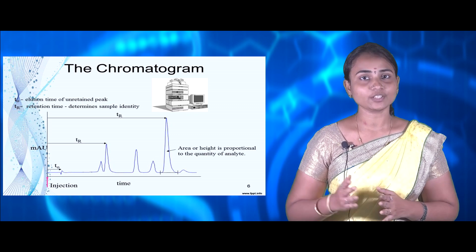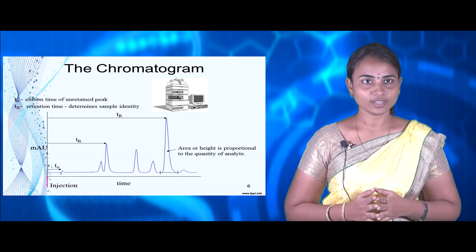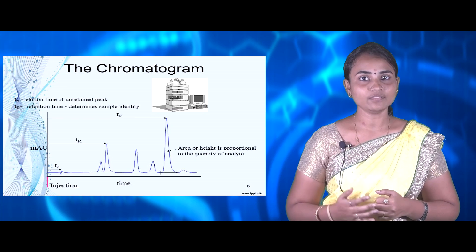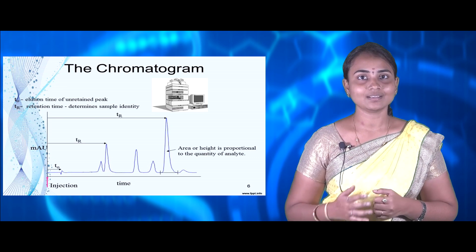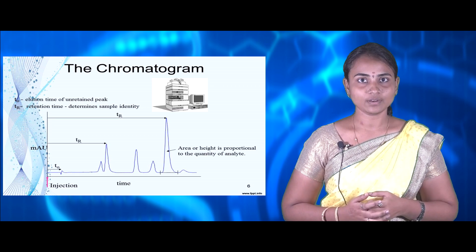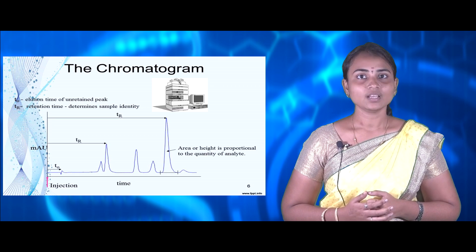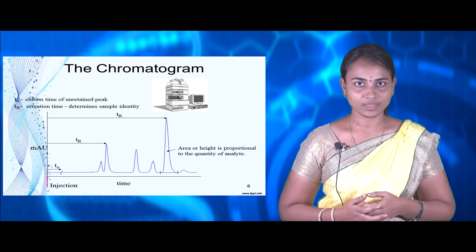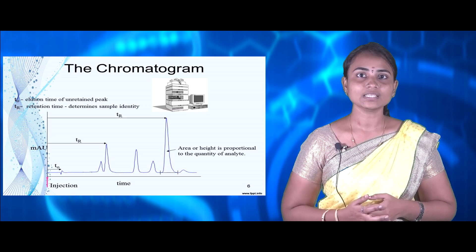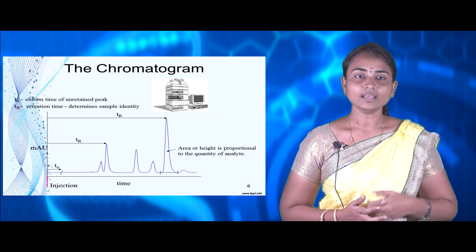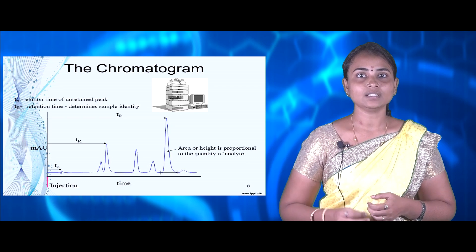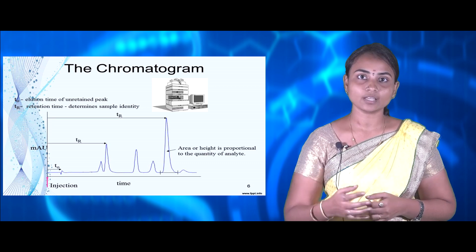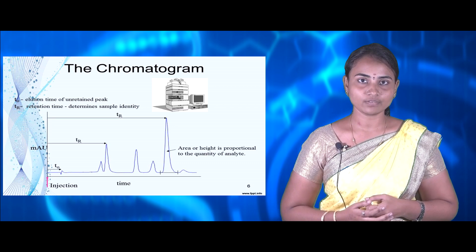The results from the detector give us a chromatogram. The chromatogram involves T0 and TR, where different peaks derived at different retention time periods represent different components. T0 represents the elution time of the unretained peak, and TR is the retention time of particles. The chromatogram involves peaks of different areas and heights, and height and area are directly proportional to the concentration of different particles.